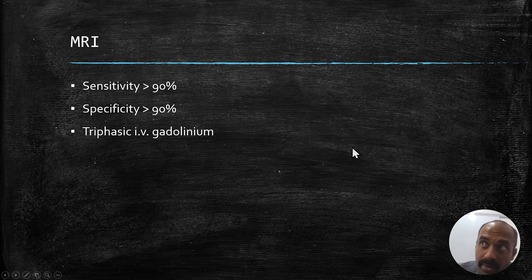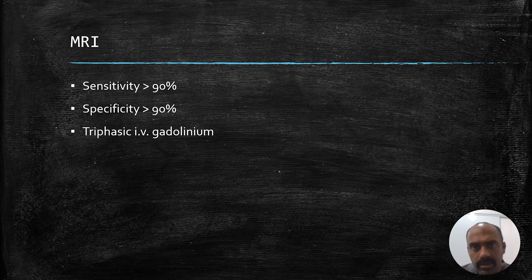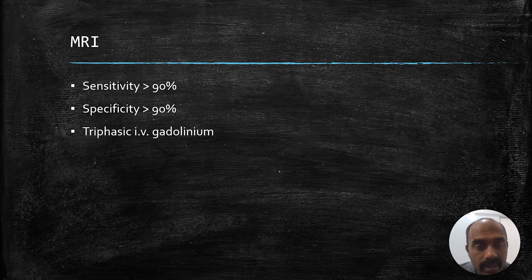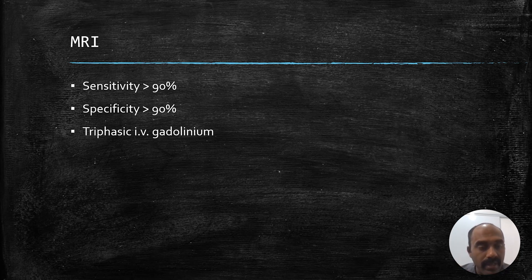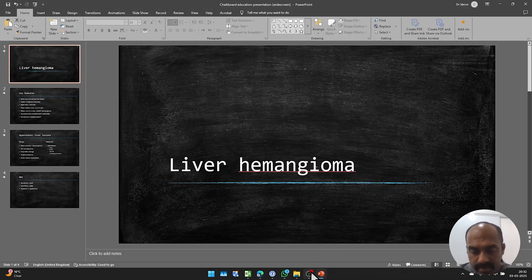If you were to choose one particular problem-solving tool which would give you the best accuracy, that would be the MRI. Do the MRI, which has a sensitivity and specificity over 90%. All you need to do is use IV gadolinium as an agent, do a triphasic study, and you can for sure identify it as a hemangioma. The descriptive pattern would be peripheral puddles of contrast with centripetal filling in, and appearing very bright on a T2 sequence.